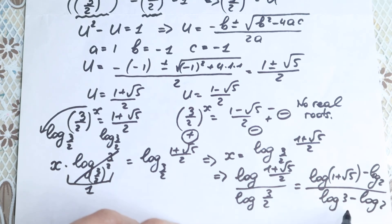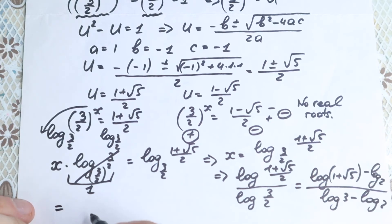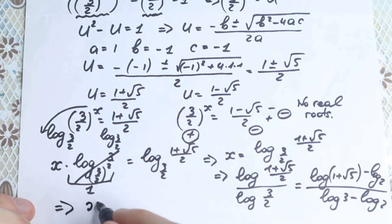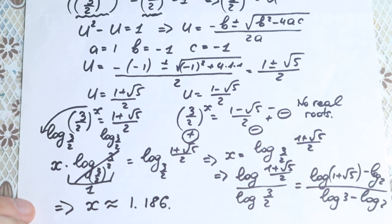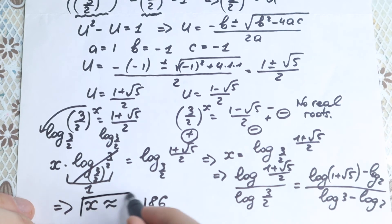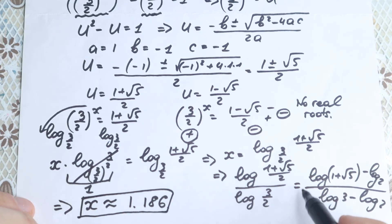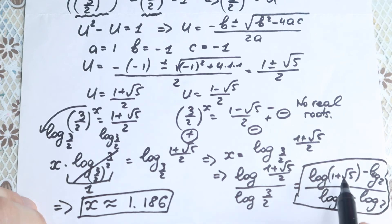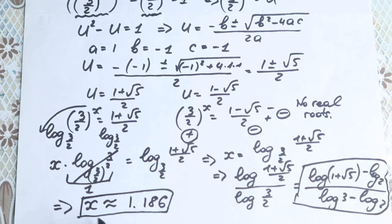If you want to simplify this a little more, we can. Using a calculator, x is approximately equal to 1.186. This is approximately the answer to the problem. The algebraic solution is x equals log base 3 over 2 of 1 plus square root of 5 over 2.